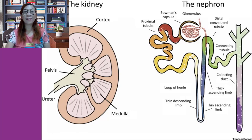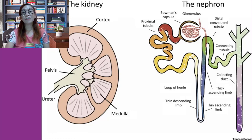The afferent arteriole, which arises from a cortical radiate artery, is the feeder vessel. The efferent arteriole receives blood that has passed through the glomerulus and arises from the afferent arteriole that drains the glomerulus.